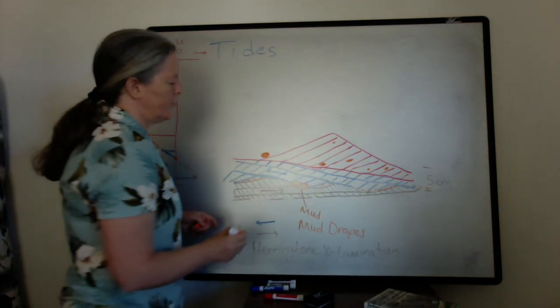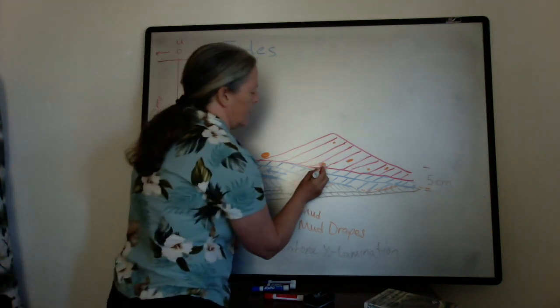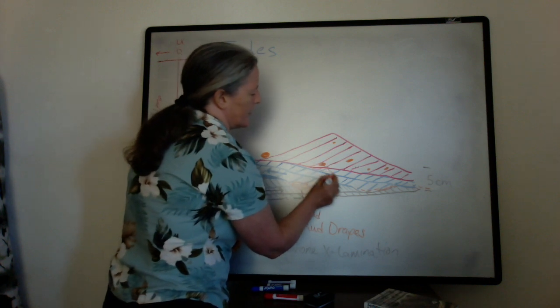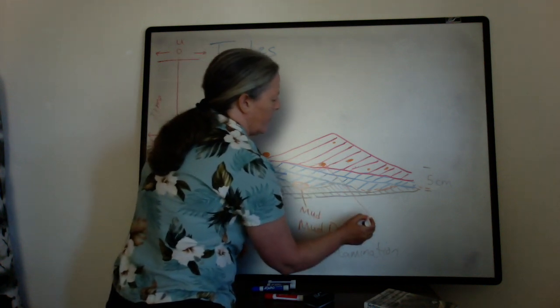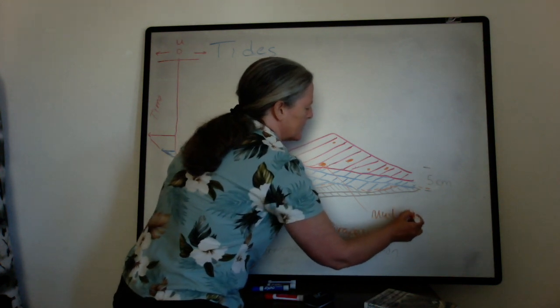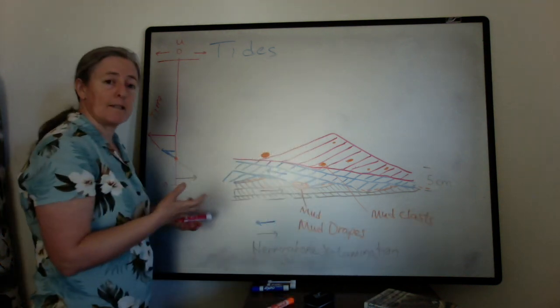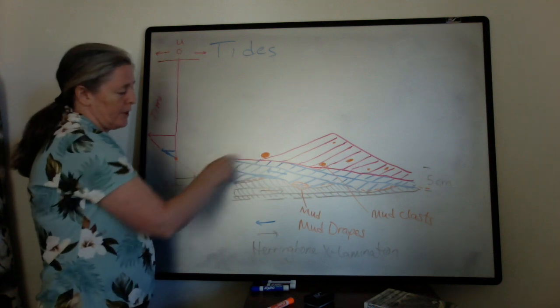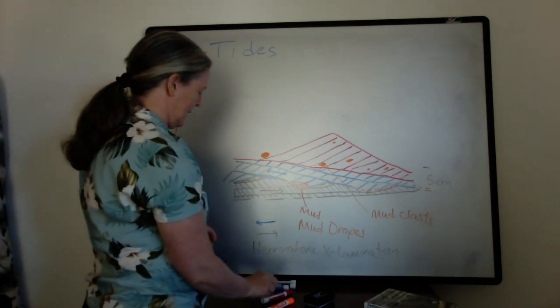I drew out in orange to represent maybe the mud deposited in the previous tide. So you often end up with mud clasts. It takes a high flow speed to rip up the mud and you can actually transport that as clasts.